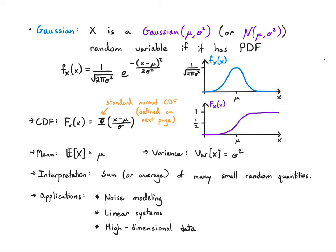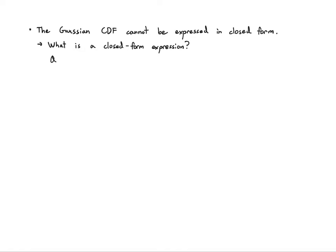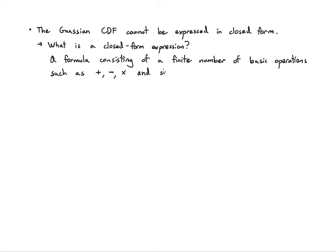Now let's return to the issue of the CDF and the capital Φ function. The problem is that the Gaussian CDF cannot be expressed in closed form. Closed form means a formula consisting of a finite number of basic operations — plus, minus, multiply, divide, sine, cosine, exponential, log, and so on — things we've seen in high school. That seems like something we'd want in order to have a solution.